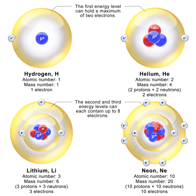In 1938, Otto Hahn, Lise Meitner, and Fritz Strassmann discovered nuclear fission, or the fractionation of uranium nuclei into light elements, induced by neutron bombardment. In 1945, Hahn received the 1944 Nobel Prize in Chemistry for his discovery of the fission of heavy atomic nuclei. The discovery of nuclear fission would lead to the development of nuclear power and the atomic bomb by the end of World War II.